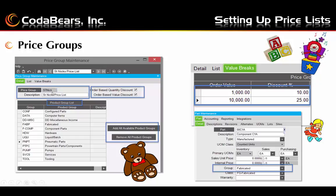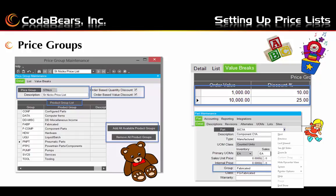Here we can see the name is St. Nick's price group and the description shows that it uses both order based quantity and order based value discounts. The product groups selected are shown on the left. You can either add all the product groups or remove all the product groups by pressing these buttons. Usually you'll add all of them and then remove specific ones by selecting their rows if you don't want all product groups selected. In Part Maintenance on the right, we show that the group 'Fabricated' is selected on this part, and the group 'Fabricated' is also shown in the product group list on the St. Nick price group.